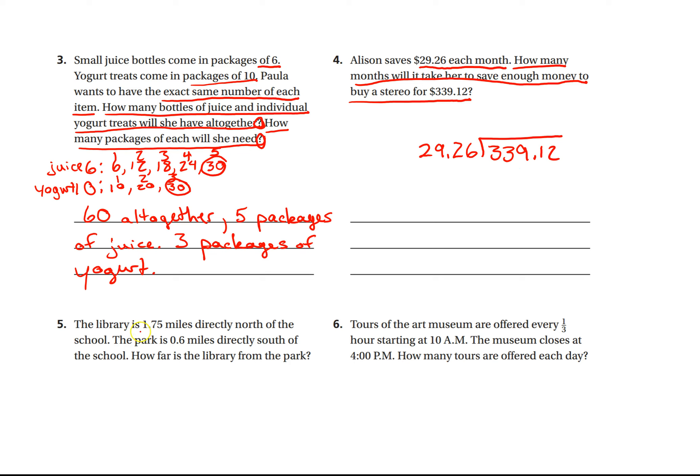Number five, the library is 1.7 miles directly north of the school. So that north would be, if we're thinking about a map, it would be up on the map. The park is 0.6 miles directly south of the school. So they are opposite locations. How far is the library from the park? So the library, let's say we start at 0, would be our origin. It's north, 1.75. And the park is south, 0.6. So you need to find the total distance. And if you're finding total, that means you need to add those two distances up. I'll let you go ahead and do that math.